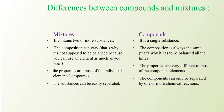Differences between compounds and mixtures: In mixtures, it contains two or more substances, but in compounds, a single substance forms. Also, in a mixture the composition can vary — it doesn't have to be balanced, because you can use an element as much as you want. But in compounds, the composition is always constant and cannot vary. For example, you cannot add as many sodium atoms as you want to NaCl, because every chemical property in that compound would change — that's why it has to be balanced at all times.